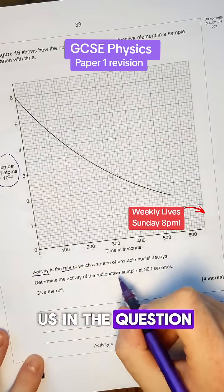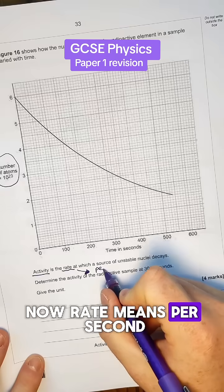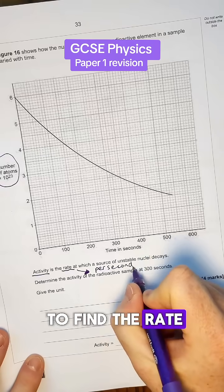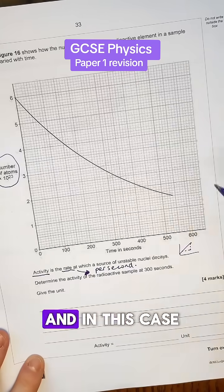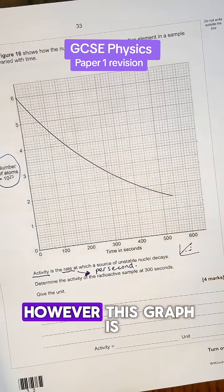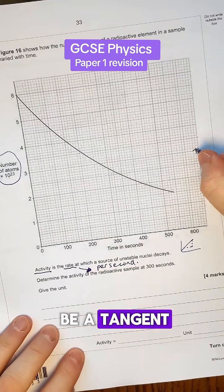Now activity actually tells us in the question is the rate at which a source of unstable nuclei decays. Rate means per second. If you're ever asked to find the rate of something usually it means the gradient of a graph. In this case it means gradient however this graph is not a straight line it is a curve. So what we're going to have to draw on it is going to be a tangent.